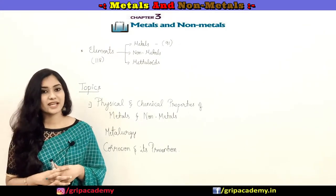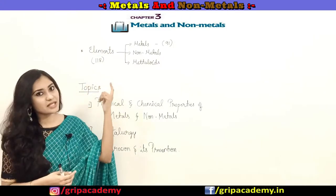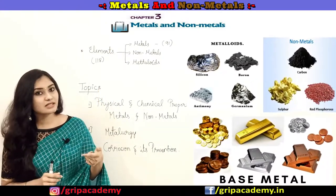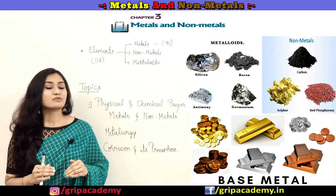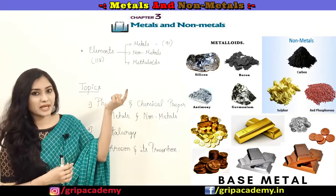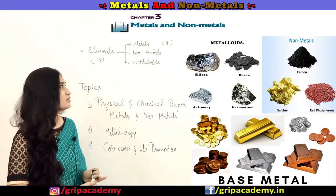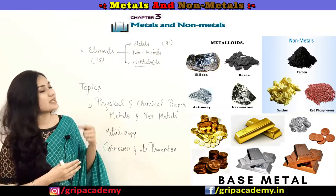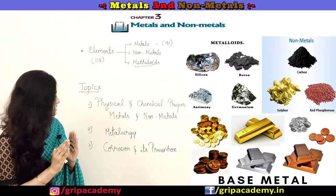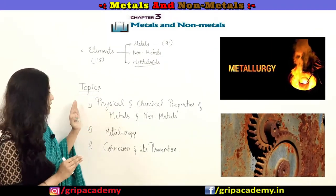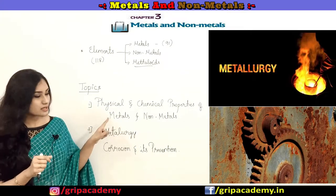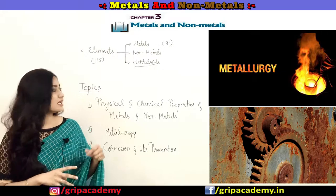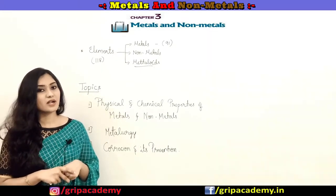Let us start this session. You already know that elements can be broadly classified into three types: metals, non-metals, and metalloids. Till now we have found 118 elements, out of which 91 are metals. Metalloids are elements which show intermediate properties between metals and non-metals. In this chapter we shall be discussing the physical and chemical properties of metals and non-metals, metallurgy, and corrosion and its prevention.